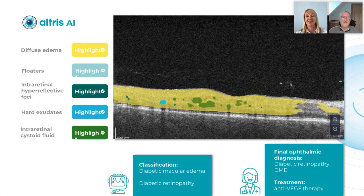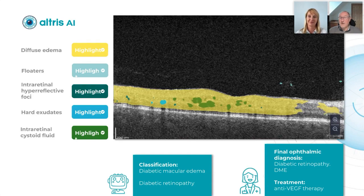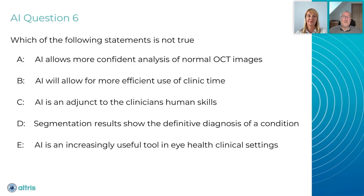Marvellous, thank you, Maria. That glaucoma case absolutely fascinates me, because we probably just wouldn't have picked that up by any other method. Suddenly there is AI saying high risk of glaucoma — and what happened? We're saving this person's sight at a very early stage, and that's AI working for us. So, question six.